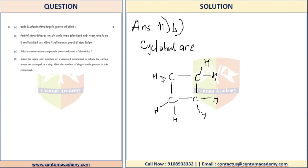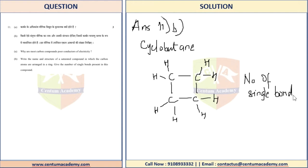Now write the number of single bonds. Please note it is a saturated compound, so do not write any double bonds — saturated means all single bonds. Counting them: there are eight hydrogens giving eight single bonds, and four carbon-carbon bonds giving four single bonds. Eight plus four equals twelve, so there are twelve single bonds in cyclobutane.